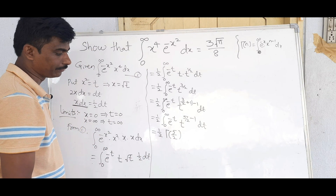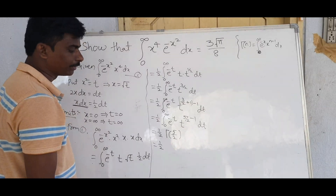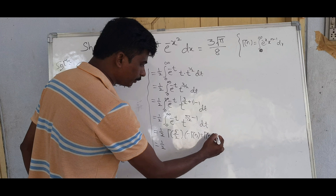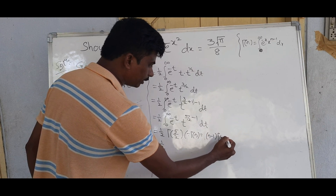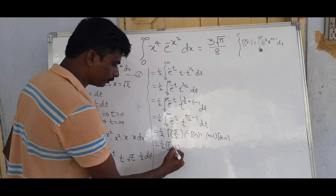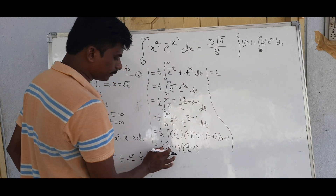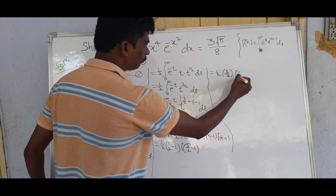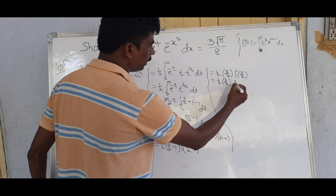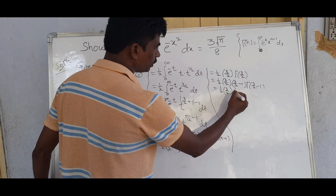We have (1/2) · Γ(5/2). Using the Gamma reduction formula Γ(n) = (n−1) · Γ(n−1): Γ(5/2) = (5/2 − 1) · Γ(5/2 − 1) = (3/2) · Γ(3/2). Then Γ(3/2) = (3/2 − 1) · Γ(3/2 − 1) = (1/2) · Γ(1/2). So we have (1/2) · (3/2) · (1/2) · Γ(1/2).